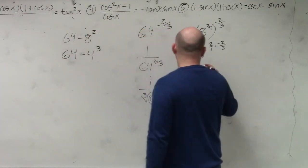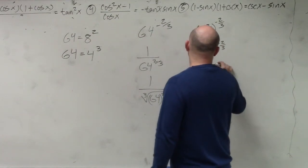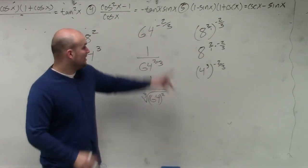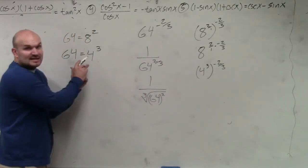So in this example, watch what happens. When I write this as 4 to the third power raised to the negative 2 thirds, all I did was rewrote 64 as 4 cubed. Do you guys agree with me that still works?